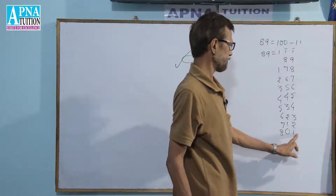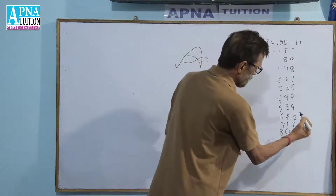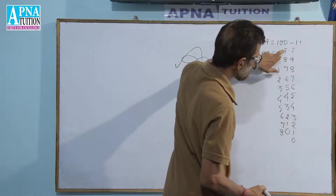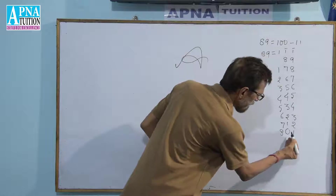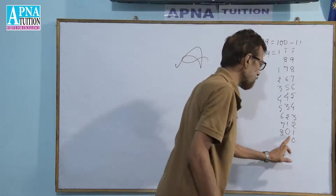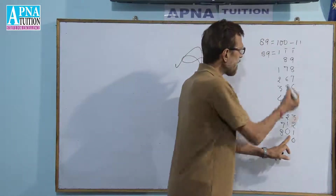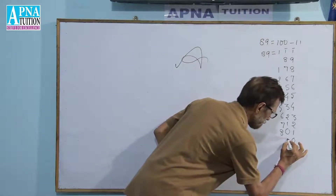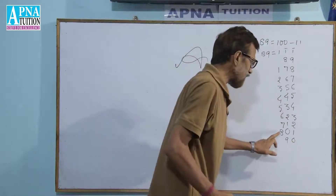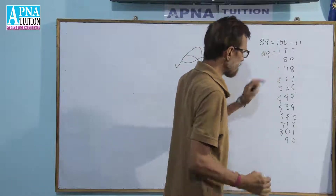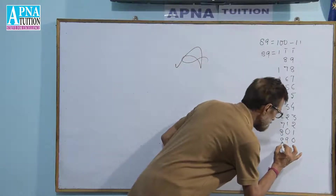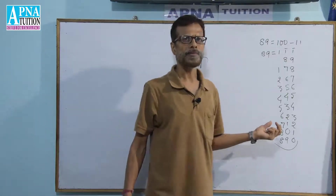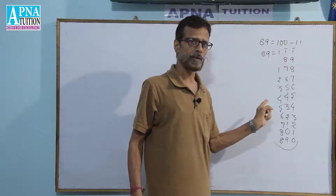In this case we have 0 minus 1, so we take borrowing — we get 10, and 10 minus 1 becomes 9. Now here we have 7, and 7 plus 1 is 8. This completes the table of 89, and it is comparatively easier than the previous method.